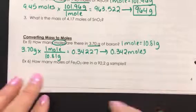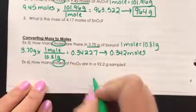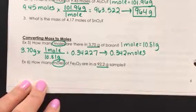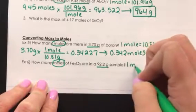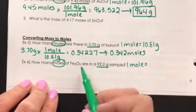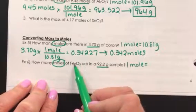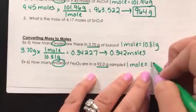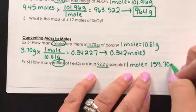Alright, last example. How many moles of iron 3 oxide are in a 92.2 gram sample? Hopefully you've noticed a little bit of a pattern. The first thing that we have to do is add up the molar mass of 2 irons and 3 oxygens, which is 159.70 grams.